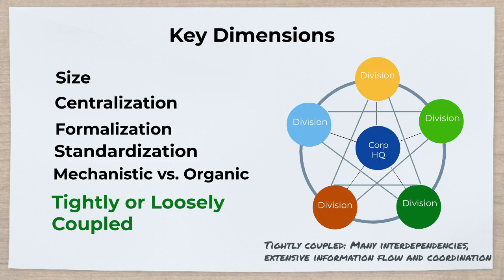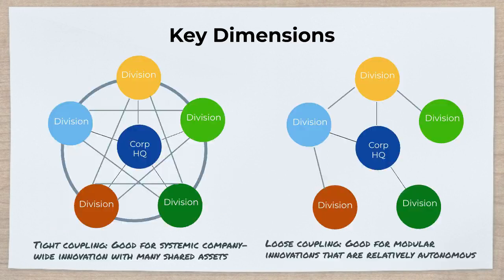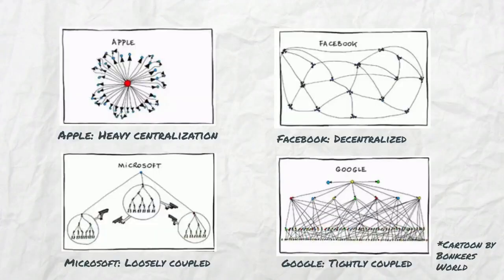Another important dimension of firm structure is whether it's tightly or loosely coupled. In a tightly coupled firm there are many interdependencies between divisions, extensive information flow, and lots of coordination. In a loosely coupled organization there are few interdependencies, modest information flow, and relatively little coordination required. Tight coupling tends to be good for systemic, company-wide innovation with many shared assets; loose coupling tends to be better for modular innovations that are relatively autonomous.